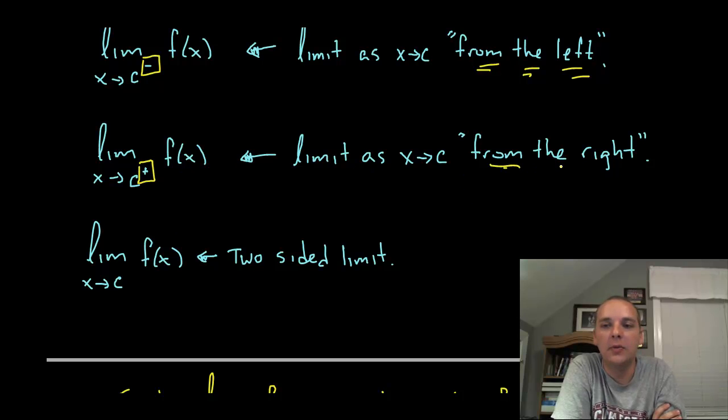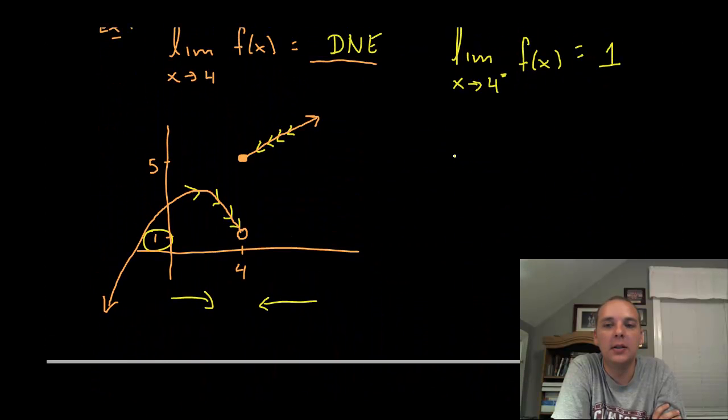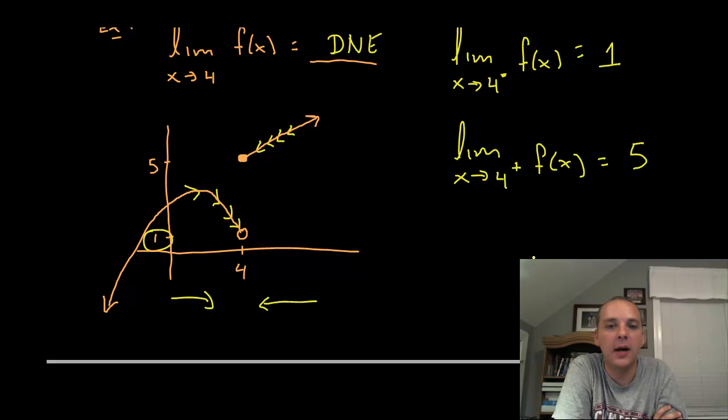Alright likewise on the other hand if you have a little plus sign instead of a little minus sign, that will be of course the limit from the right. So with an example like this, the limit as x approaches 4 with a little plus sign of f(x) clearly that would be 5.